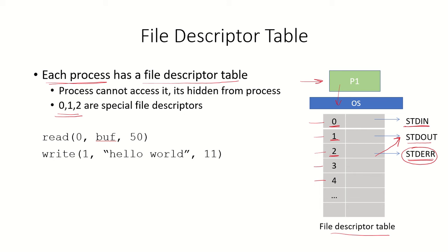For example, a system call like read(0, buf, 50) means the process is calling read and referring to file descriptor 0 — the standard input, such as the keyboard — specifying a buffer and how many bytes to read. Similarly, a system call like write(1, string, size) means the process wants to write to file descriptor 1, the standard output, displaying a string of a given byte size on the terminal screen.